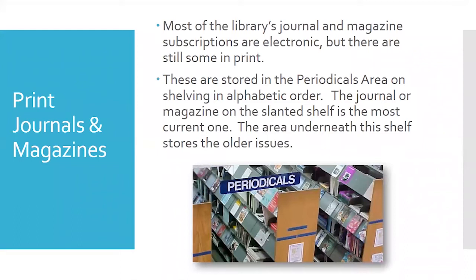A vast majority of the library's journal articles are available through electronic databases, but some are only available in print in the library. These journals cannot be checked out but are available for use in the library. If you need to access one and can't come in or you're a distant student, contact the library for assistance. We can usually find the exact article you need, scan it, and send it to you on an as-needed basis.